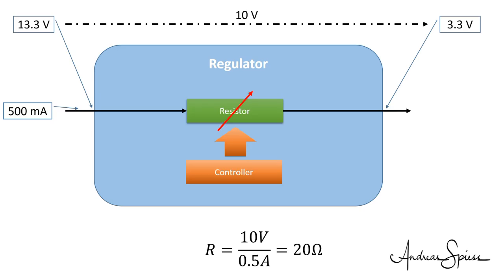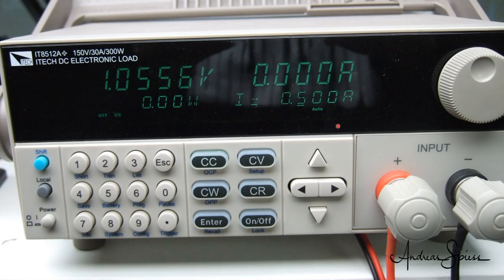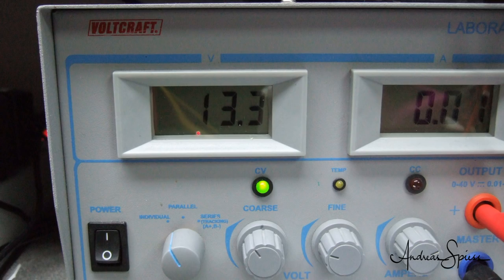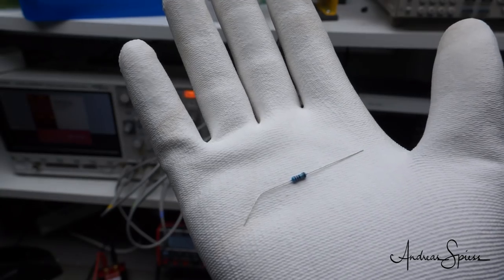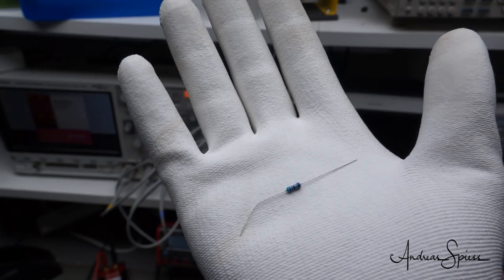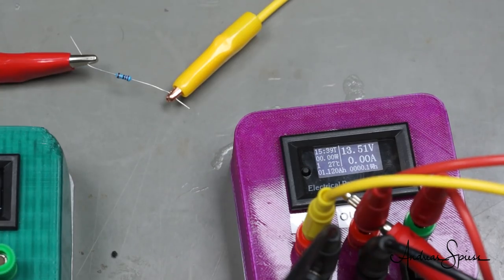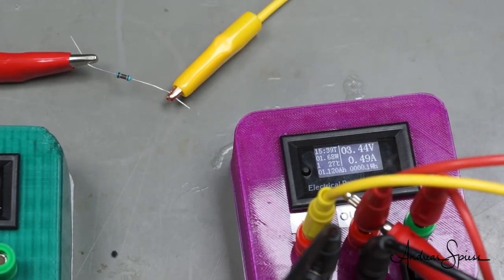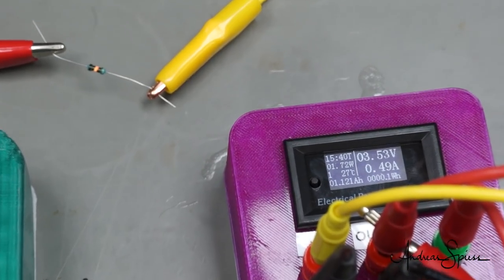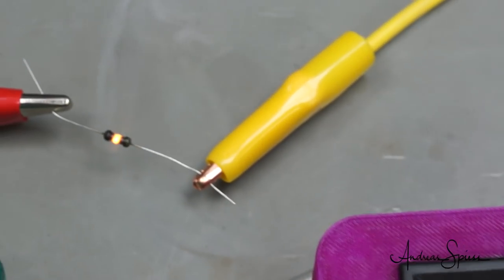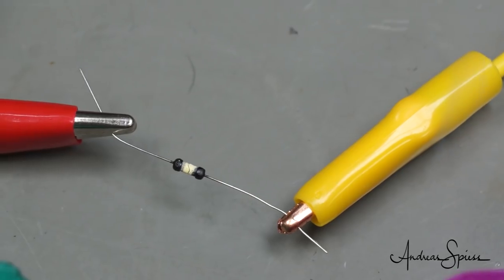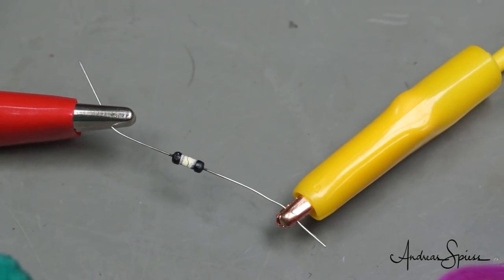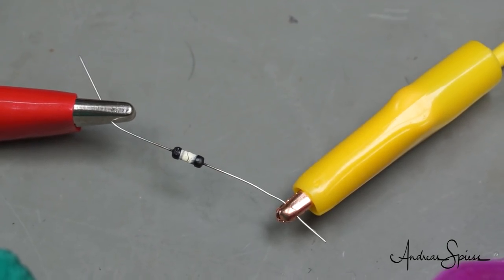So let's try if I'm right. My load is 500 mA and my power supply is at around 13.3 volts. This is my 20 ohm resistor. Actually, it is 22 ohms. When I switch the load on, we have 3.3 volts and 500 mA at the output. What happens here? Magic smoke? Not good. The resistor destroys itself in seconds. And the smell is not healthy.